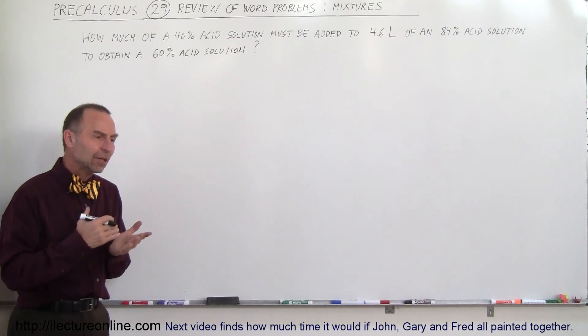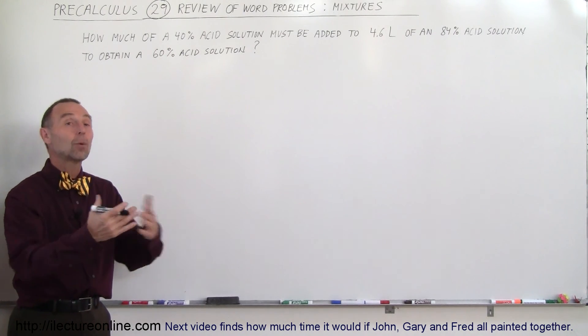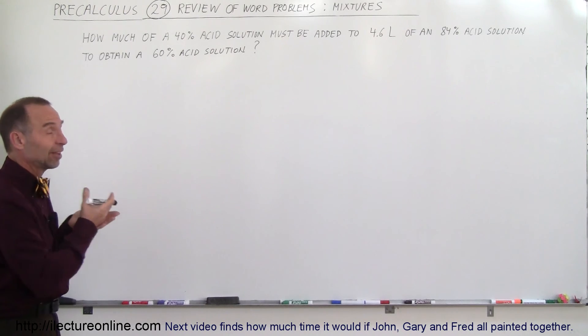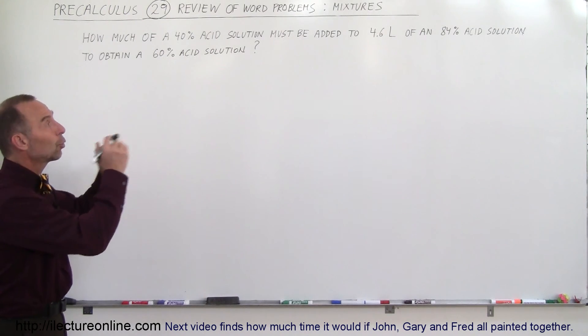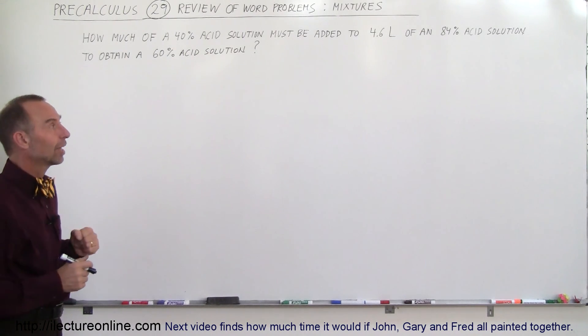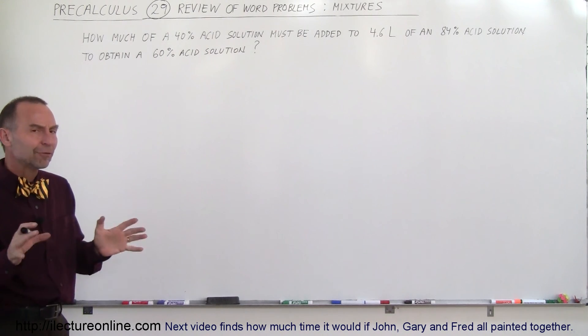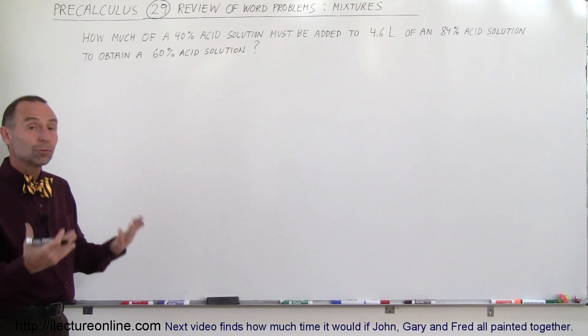In this case they don't tell us how much of the final solution they want, they just want to know how much of the initial solution, the 40% acid solution, to add to a given quantity of an 84% acid solution. So it's a little bit different from the norm, but the approach should be the same.